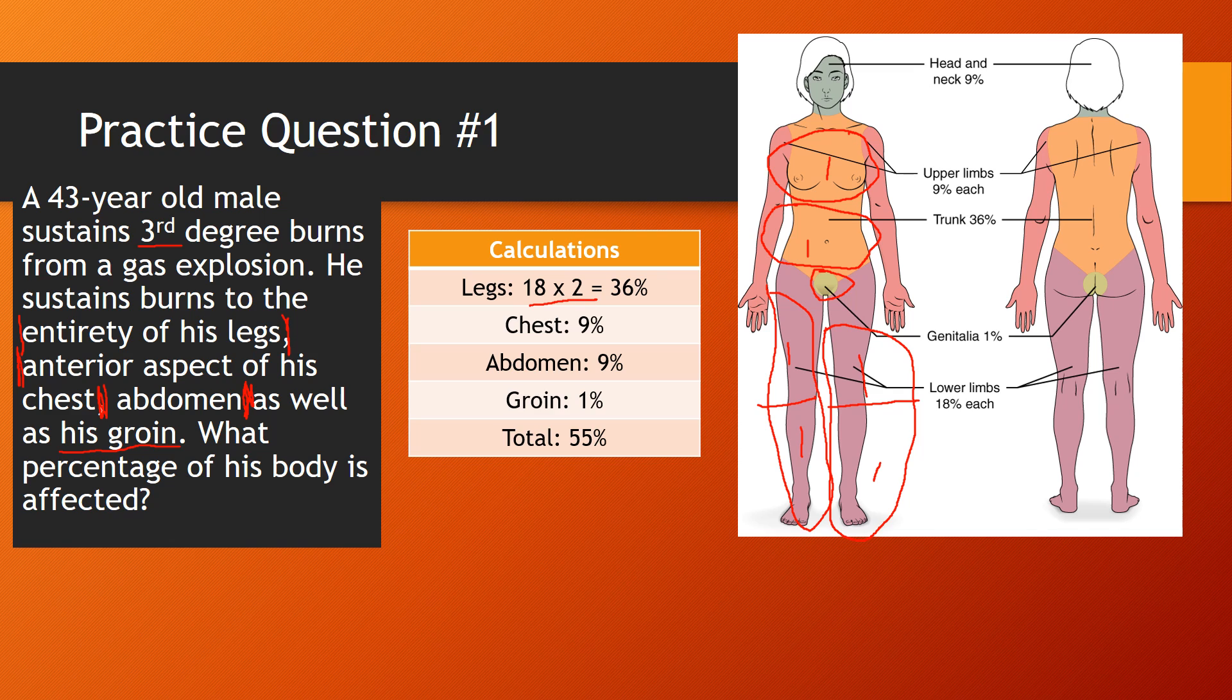So let's double check these calculations. And here you go. 18 times 2 because each leg is worth 18% or two units of 9. Multiply that by 2 because it's the entirety of his legs. And that explains that. And then you have your chest which is worth 9, abdomen worth 9, groin worth 1. Add that all up and you get a total of 55%. Let's try another one.